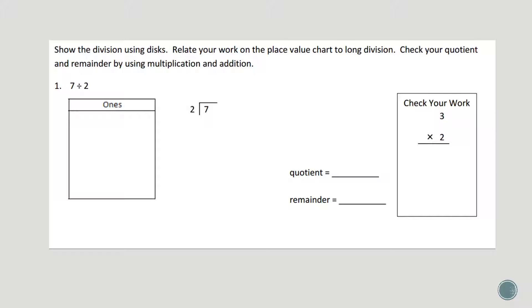Today we're going to practice dividing using a place value chart and standard algorithm and practice checking our work using multiplication and addition. So our first problem is 7 divided by 2. The first thing I want to do on my place value chart is put my 7 number disks.